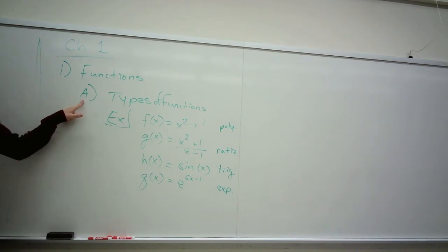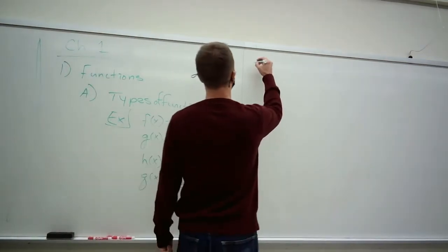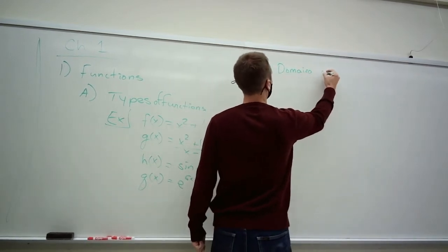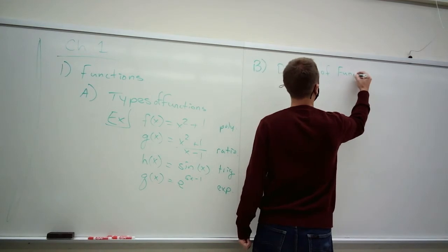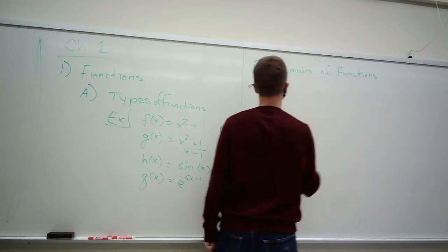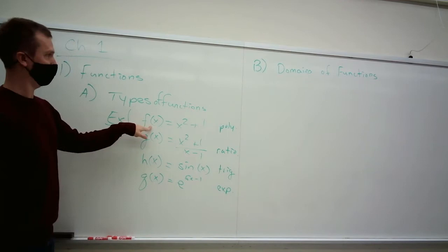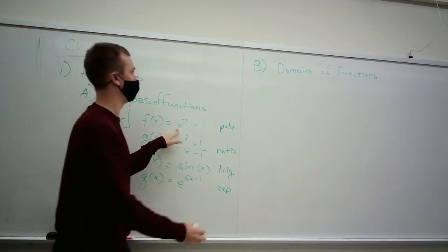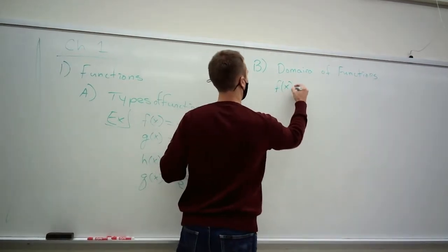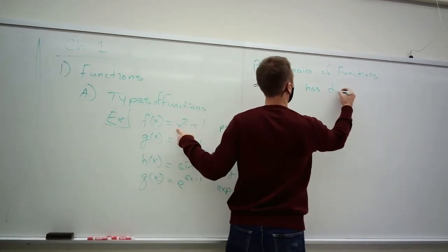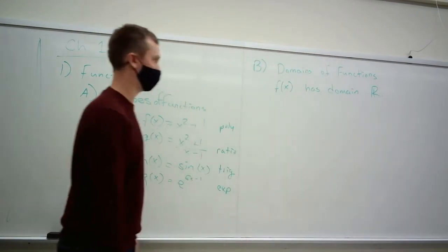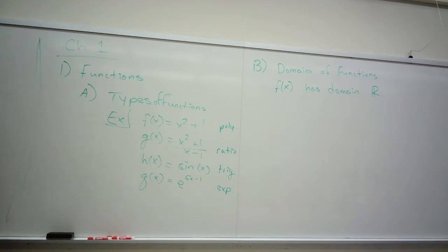So functions part B is domains of functions. Just considering this example, this function x squared plus 1, that has all reals as its domain. You can square any real number you want, and of course you can add one to any real number that you want, and you can tell them exactly what the value is.